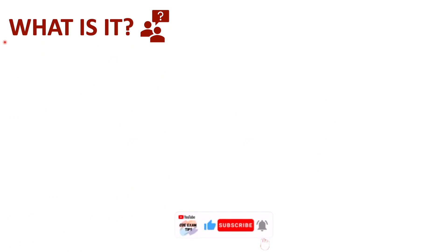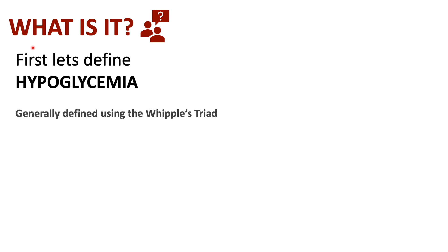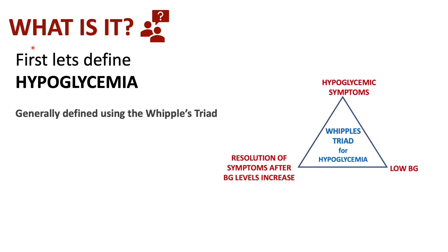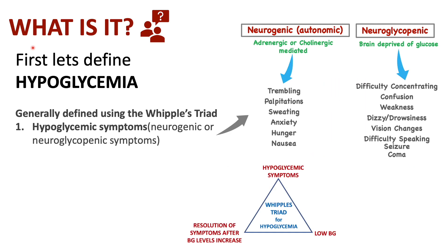Before we get into what pseudohypoglycemia is, let's first look at and define what hypoglycemia is. Hypoglycemia is generally defined using the Whipple's triad. This involves three things. First, the person having hypoglycemic symptoms — either neurogenic, which is autonomic, so adrenergic or cholinergic-mediated.